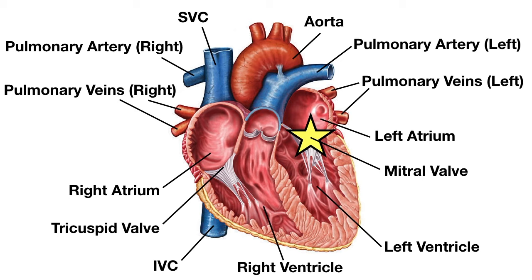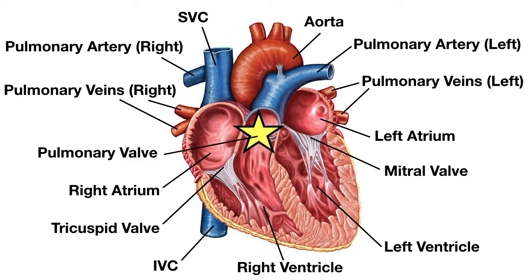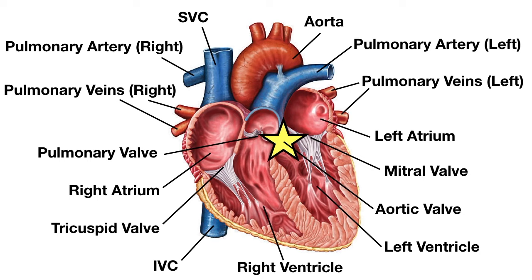You can also use the lungs to remember: the right lung has three lobes and the tricuspid valve is on the right; the left lung has two lobes and the mitral valve is on the left. The pulmonary valve is located between the right ventricle and the main pulmonary artery or pulmonary trunk. Its function is to prevent backflow from the pulmonary arteries to the right ventricle during diastole. The aortic valve is on the left between the left ventricle and the aorta, and it prevents backflow from the aorta to the left ventricle during diastole.